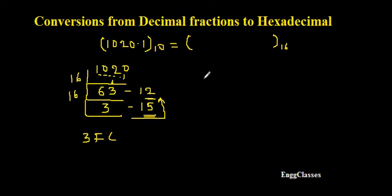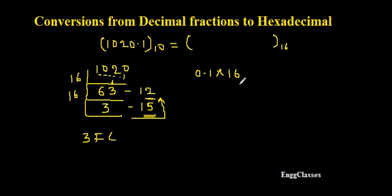I haven't taken the fractional part yet. Now I will consider the fractional part 0.1 and multiply it successively by 16, until the fractional part becomes 0. Or if the process seems endless, I will stop the iterations and write the result as the hexadecimal equivalent.